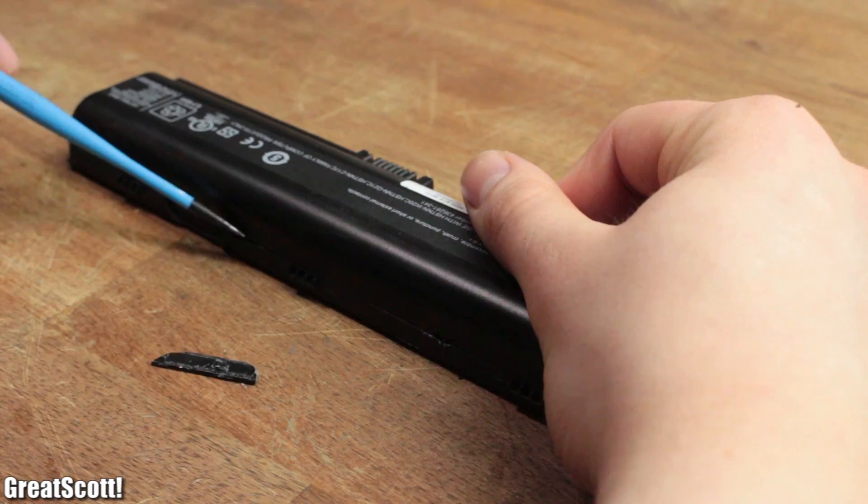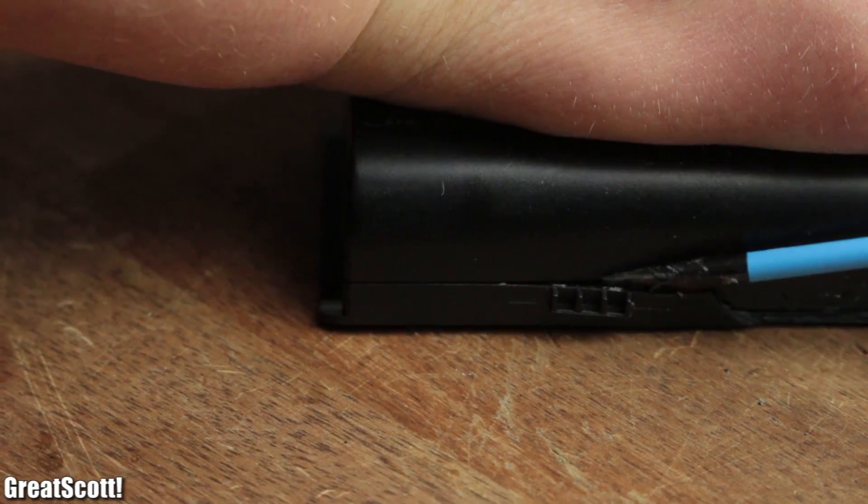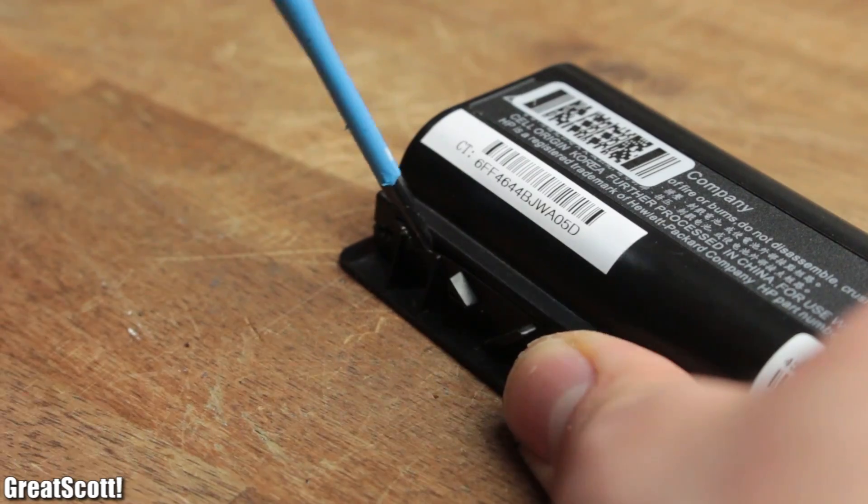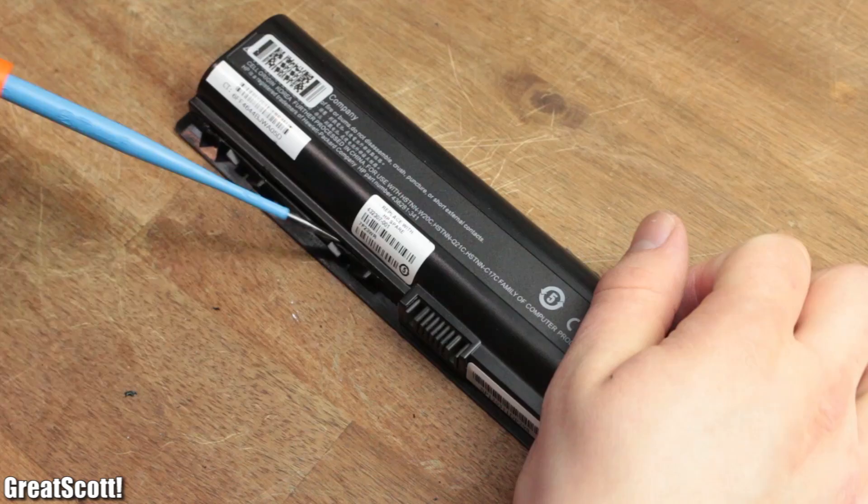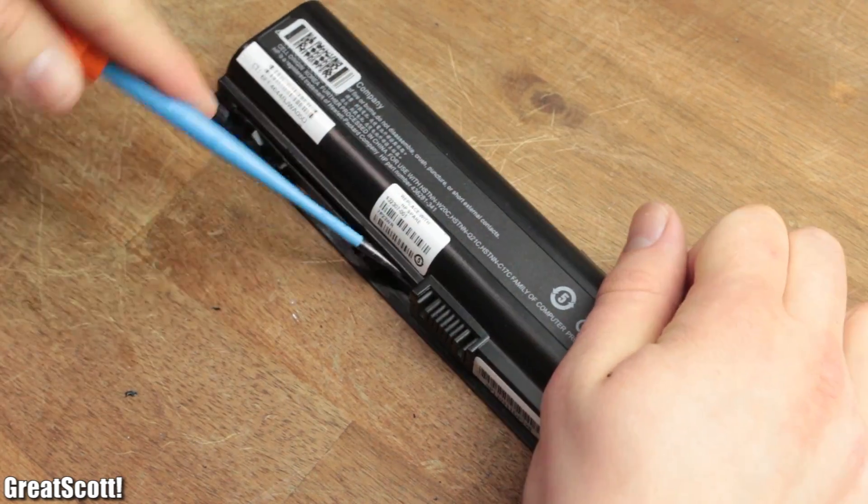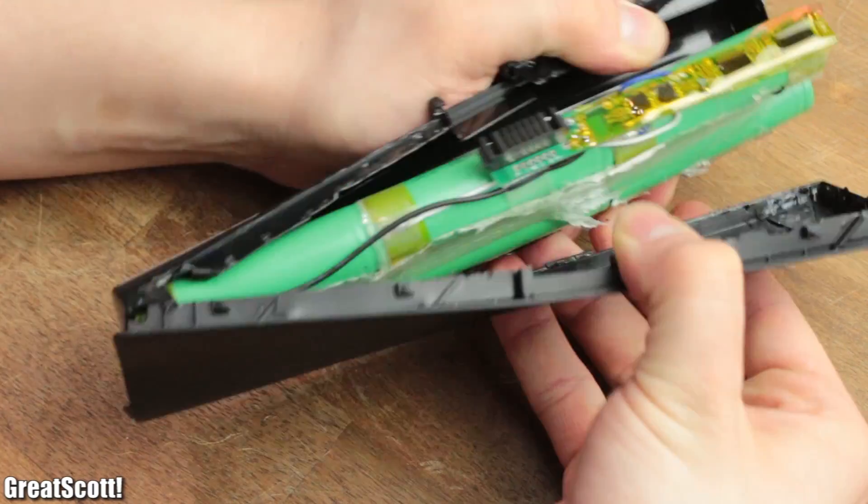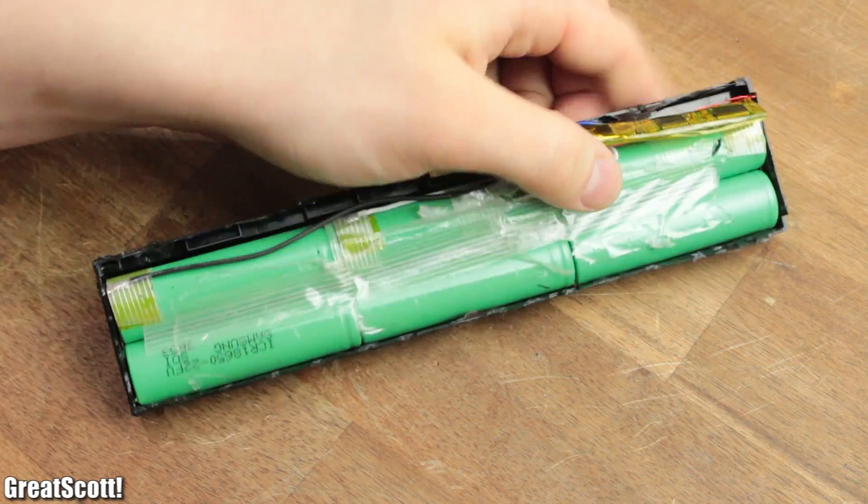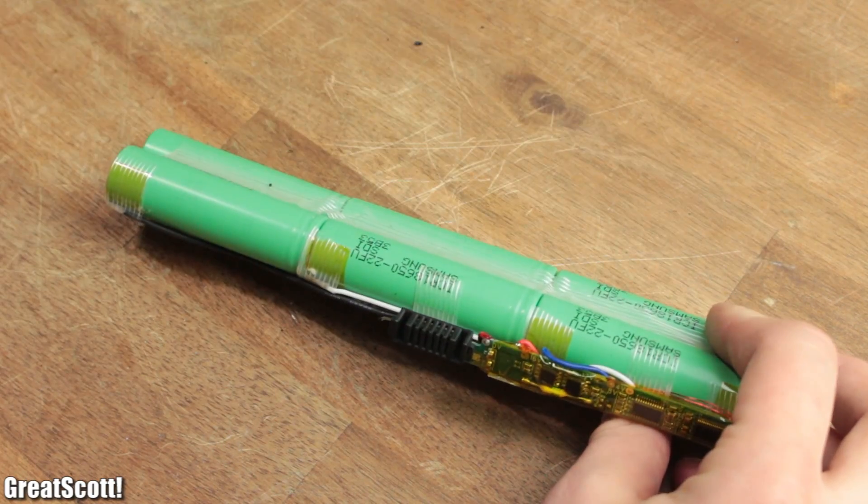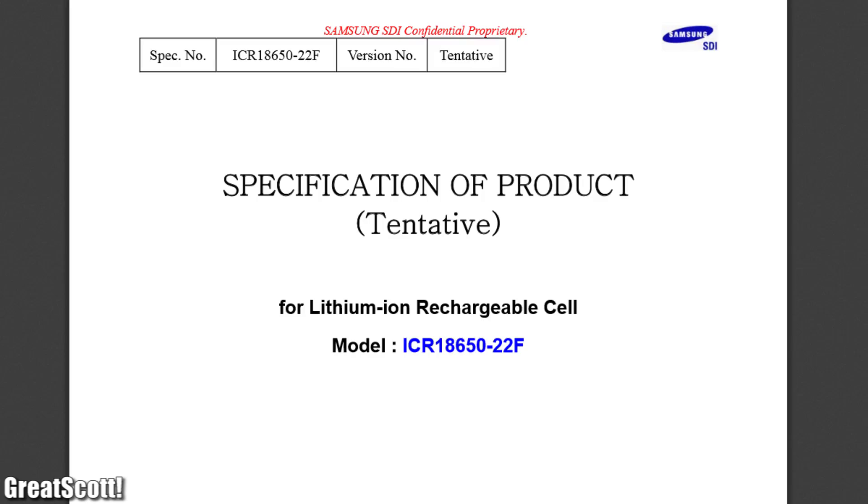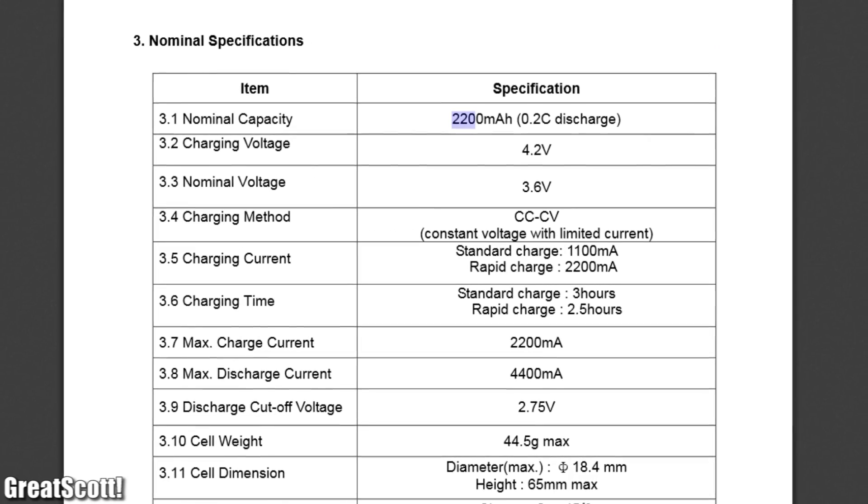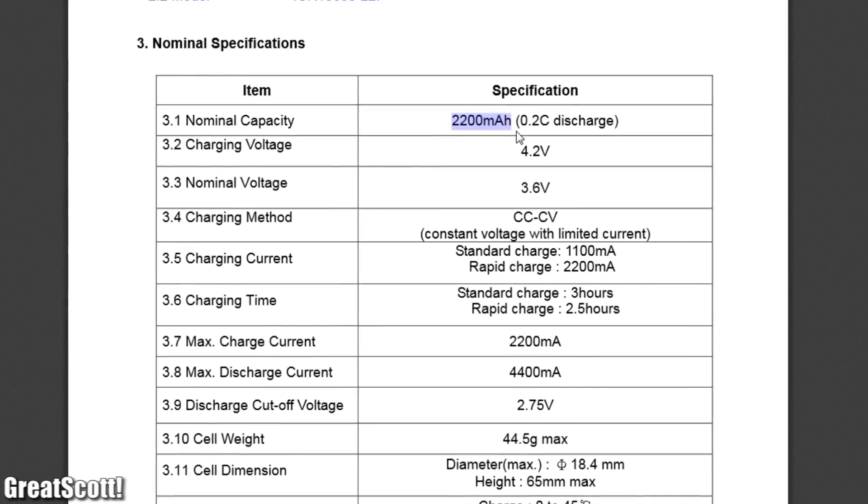The obvious first step consists of destroying the plastic case around the cells. For that I push the two halves apart through the help of a slotted screwdriver and open it up completely. With a bit of muscle force on the inside we can see six 22F lithium-ion cells with a capacity of 2.2 amp hours. Not that bad.